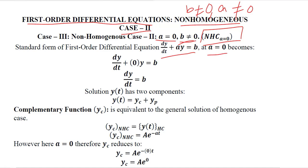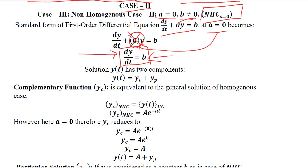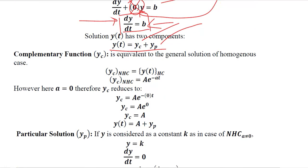We put this value into the standard form to get the current situation where a is equal to 0, so the term containing a disappears. Now we know that the rate of change of y over time is a constant value, that is b. In such a situation, the time path has two parts: one is the equilibrium, and the other is the deviation from it.